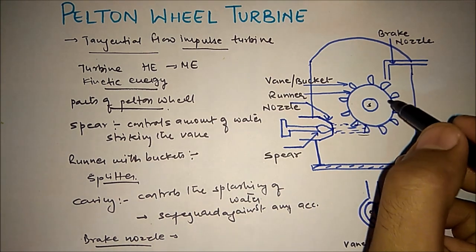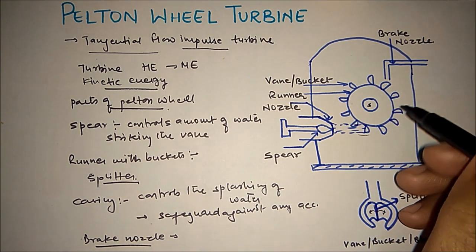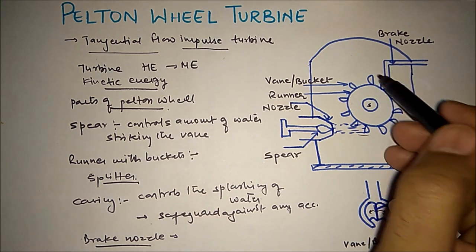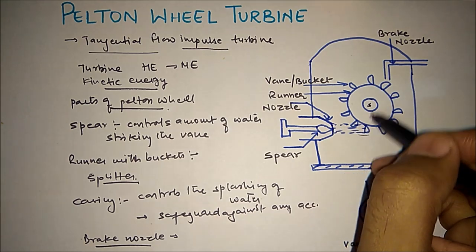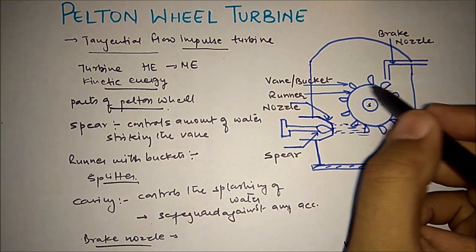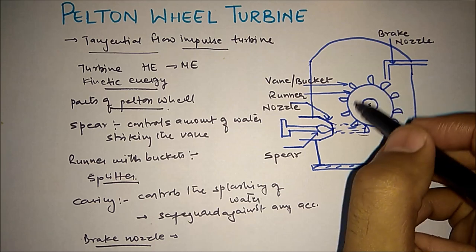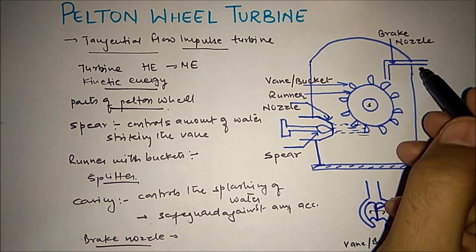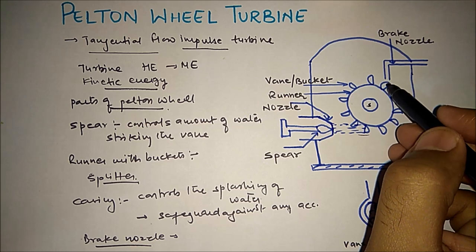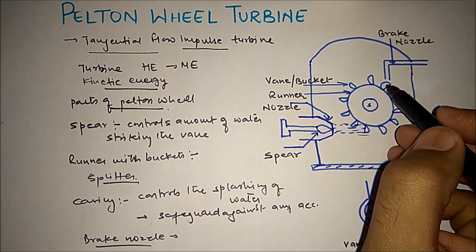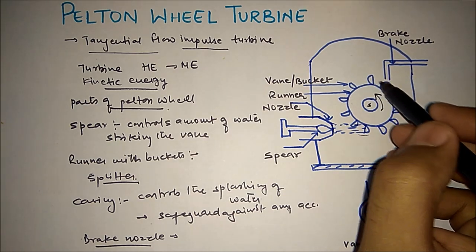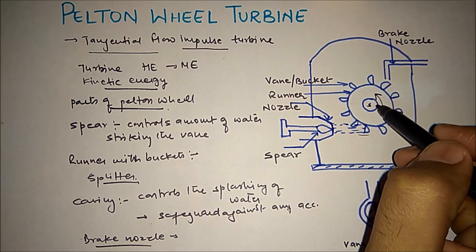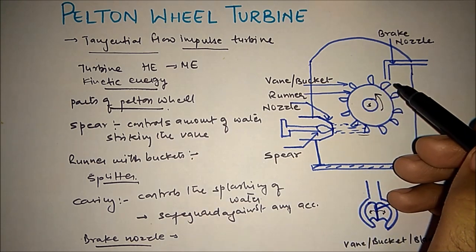The next one is the brake nozzle. The brake nozzle is especially important and can carry two marks. Why is the brake nozzle used? Because when we close the nozzle to stop the turbine, the runner still keeps rotating due to inertia. To stop it, we apply a force from the opposite direction using water from the brake nozzle. This reduces the speed of the runner and stops it quickly in a small amount of time.